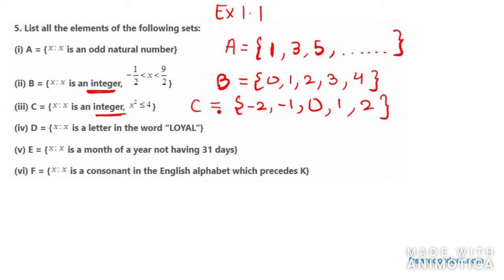Now in the fourth one, it says x is a letter in the word loyal. Again you need to remember that you need not need to repeat the letters. So L once, O once, Y once, A once.